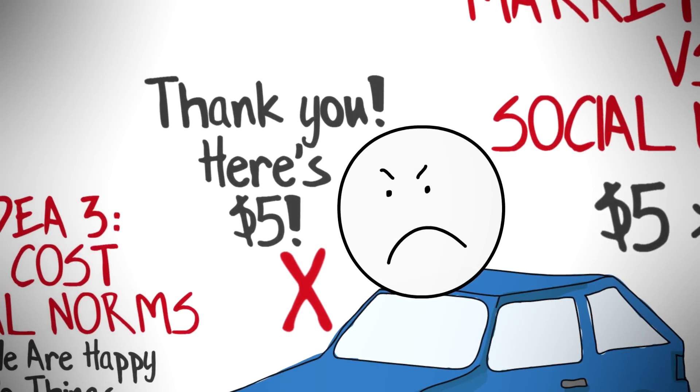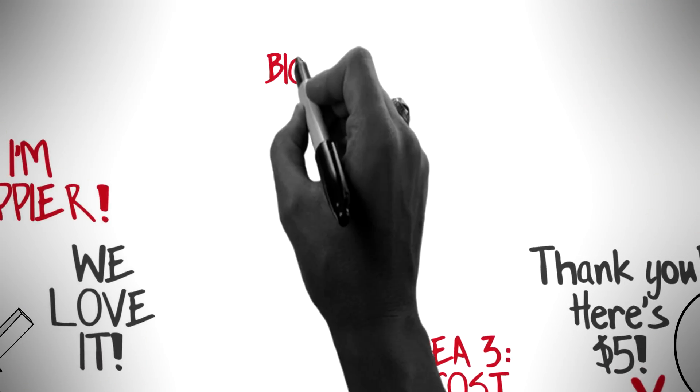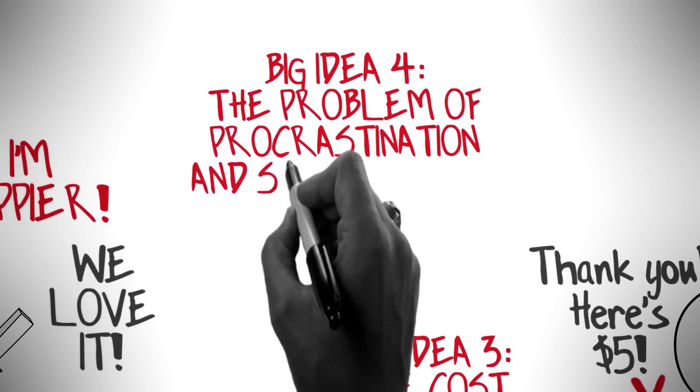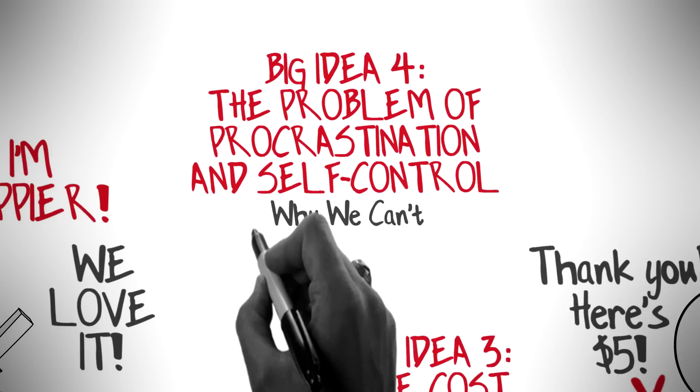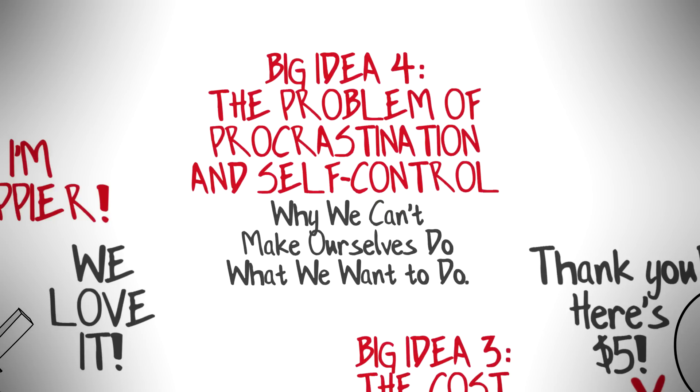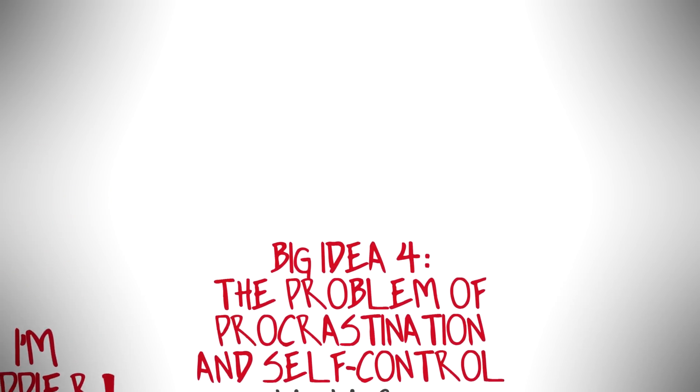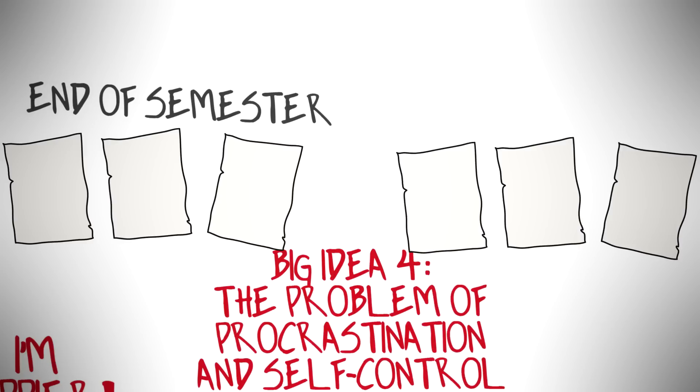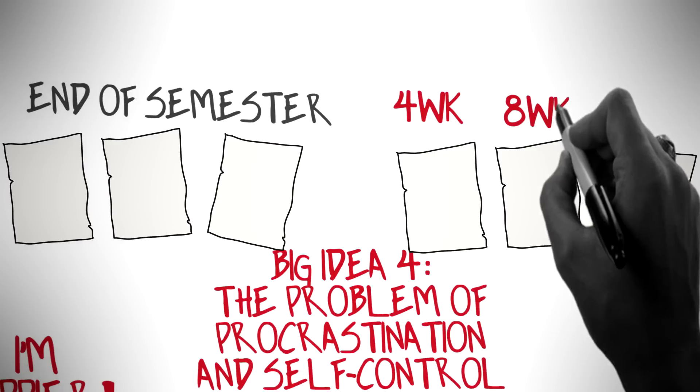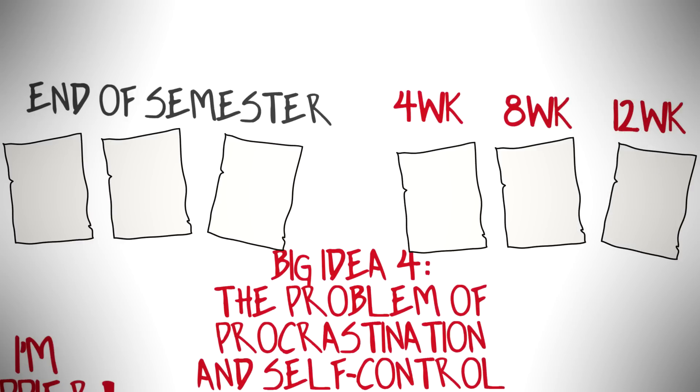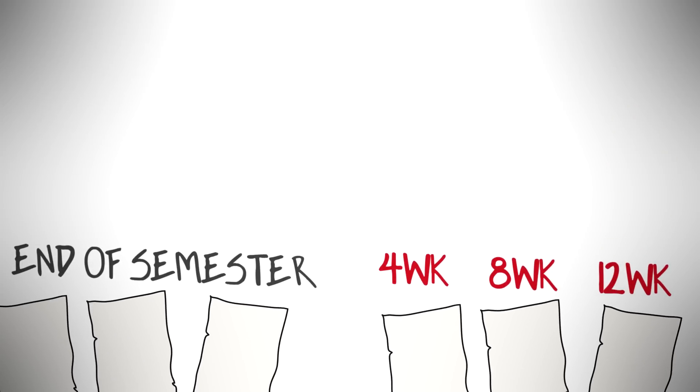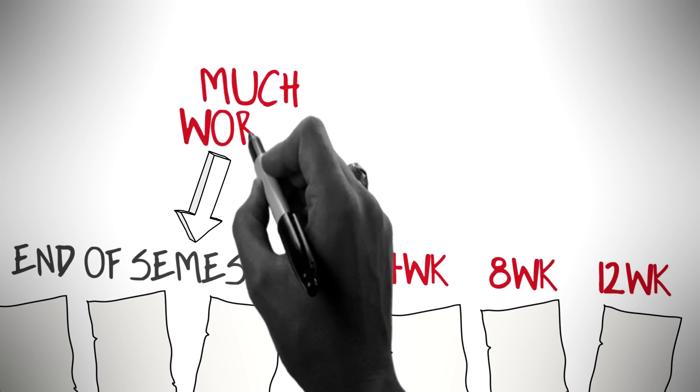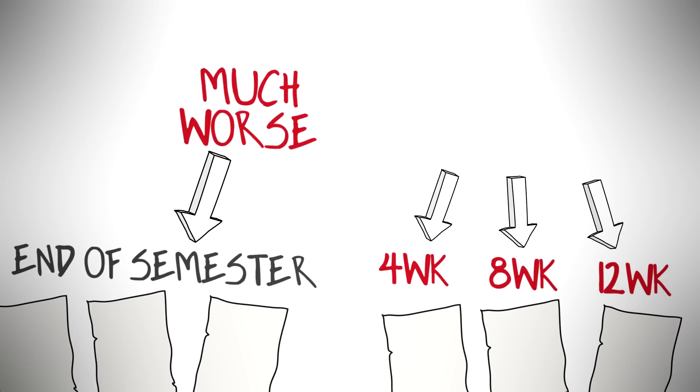The problem of procrastination and self-control: why we can't make ourselves do what we need to do. Dan Ariely had a class where three papers were due by the end of the semester, and also a class where the three papers were spread out with three deadlines at four weeks, eight weeks and twelve weeks. To keep it simple let's look at the results. The class with no deadlines did much worse than the class with the deadlines spread out throughout the semester.